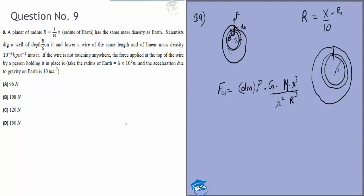This is the mass into GM by r squared, G times the mass of this part. The mass of this part will be the total mass of this planet into r cubed by R cubed, divided by small r squared.